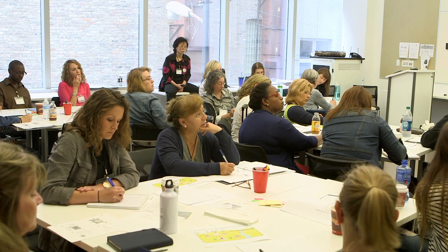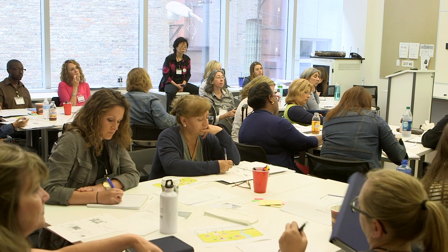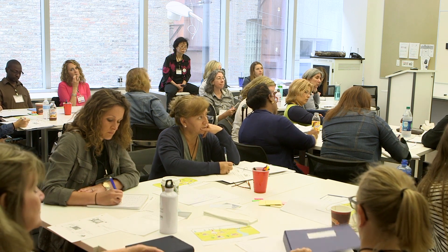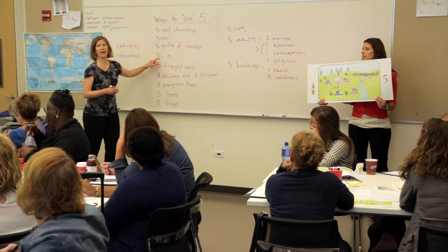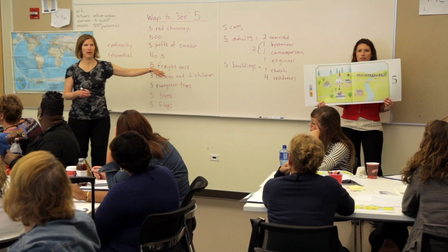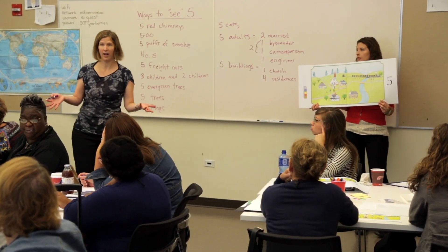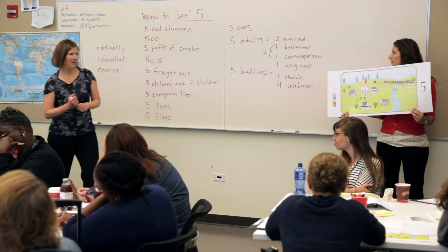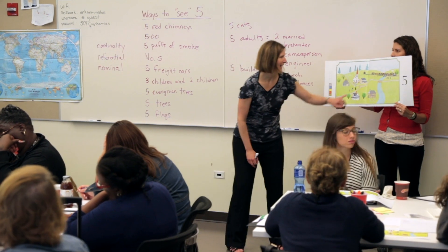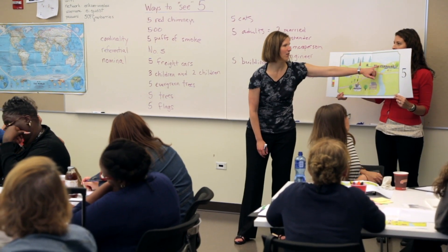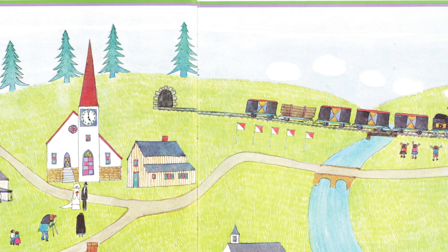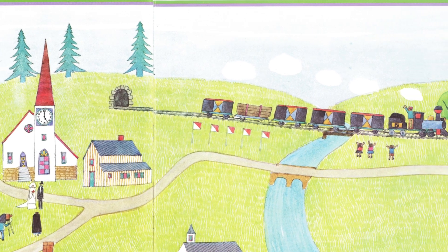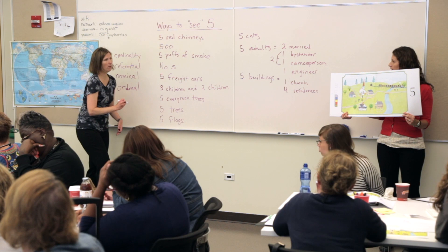Those are more challenging for kids because they don't have a good handle on what they refer to. When we call it engine number five, what's five about that engine? Nothing — it's just what we name it, it's like a code. That's the nominal use of number. And if we think about the order of the freight cars when we count things in order, that's the ordinal use of number.